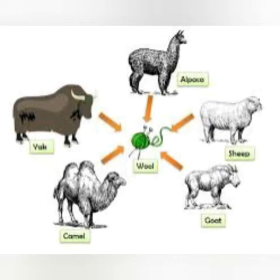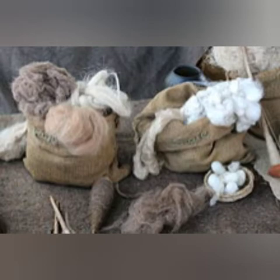There are some animals like camel, yak, and rabbit whose hair is also used. The hair is removed using clippers, and this process is called shearing. Yaani ki in animals ke baal ko nikala jaata hai, remove kiya jaata hai, jinko hum shearing process kehte hain.